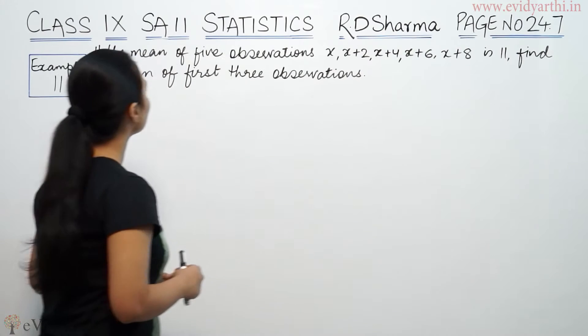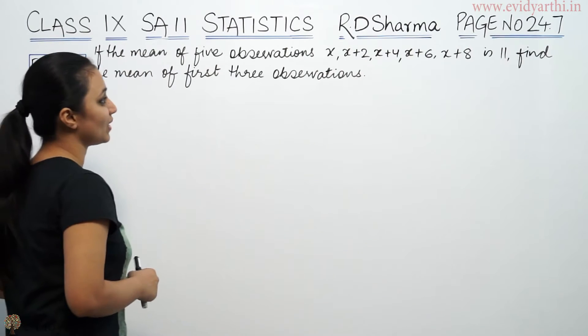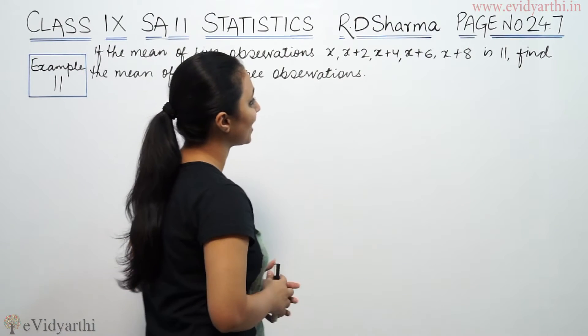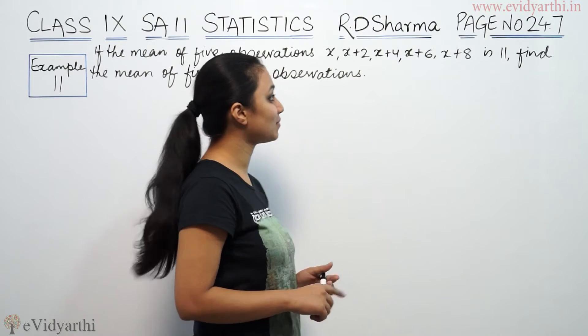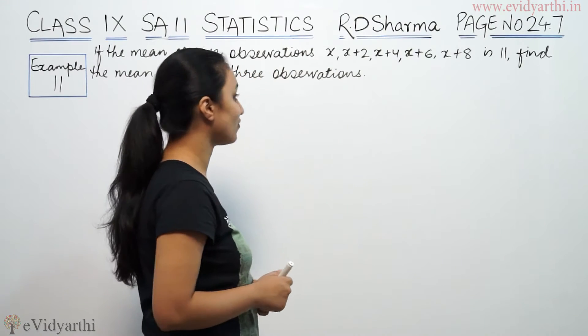It says the mean of five observations x, x plus 2, x plus 4, x plus 6, and x plus 8 is 11.